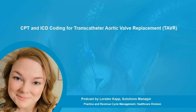Transcatheter aortic valve replacement, also called transcatheter aortic valve implantation, is a procedure which involves replacement of a thickened and narrowed aortic valve of the heart through the blood vessels. Located between the left lower heart chamber, also known as the left ventricle, and the body's main artery, the aorta, the aortic valve regulates the blood flow from the heart to the body.